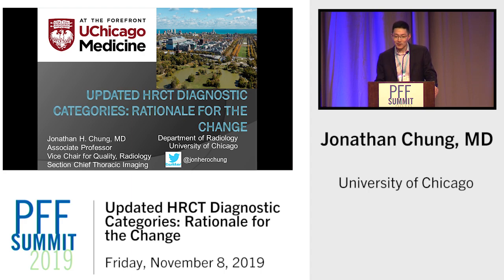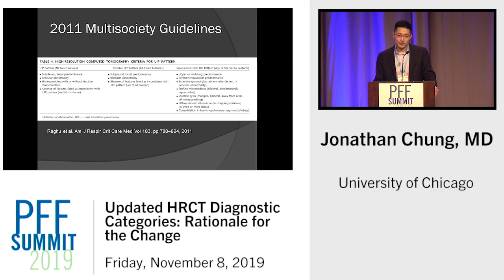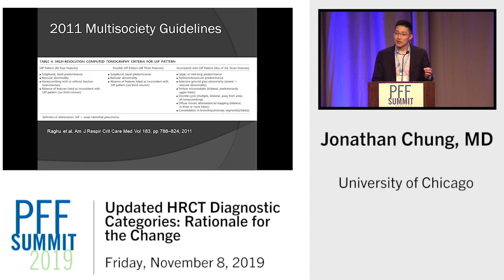We have a lot to cover, so let's get started. These are my disclosures, none of which are directly pertinent to this talk. The gist of this talk is how do we go from the 2011 multi-society guidelines, where we had a three-tier UIP CT classification system: UIP, possible UIP, and inconsistent with UIP.